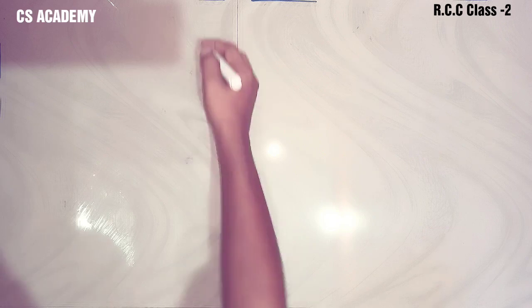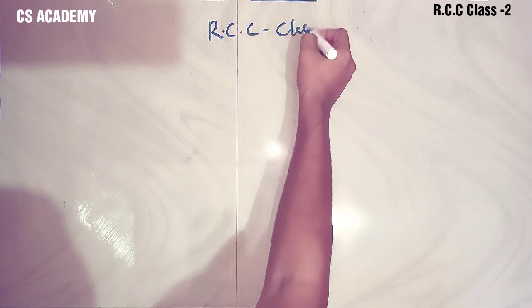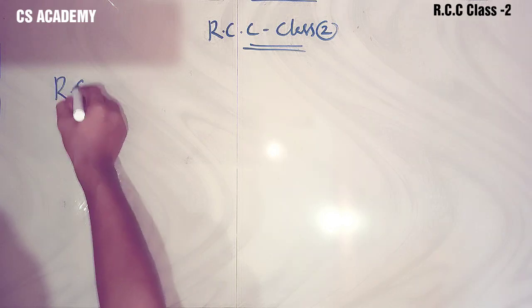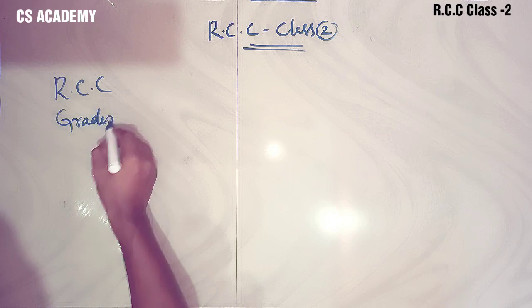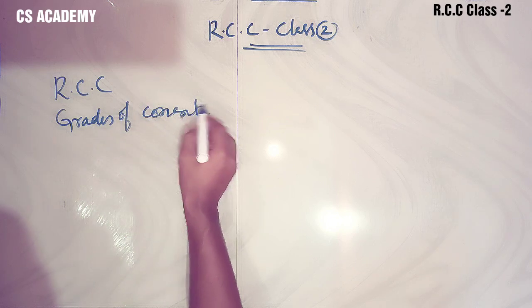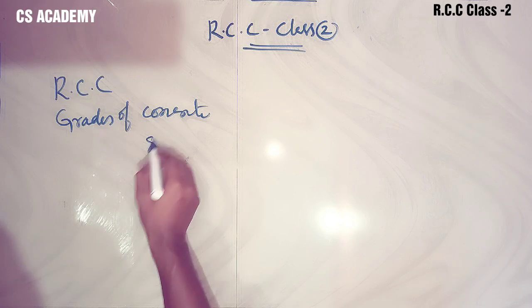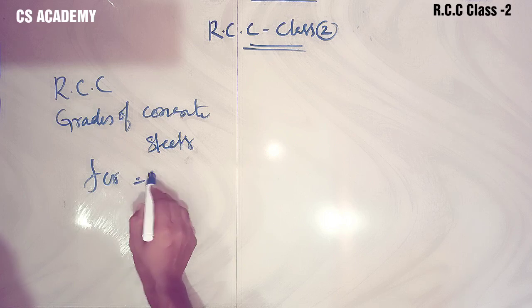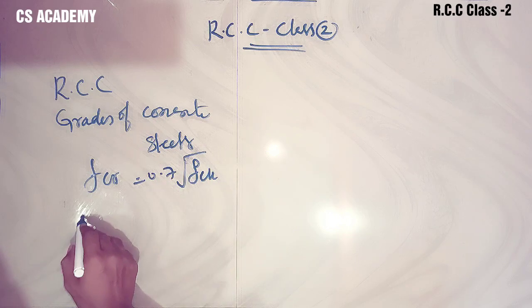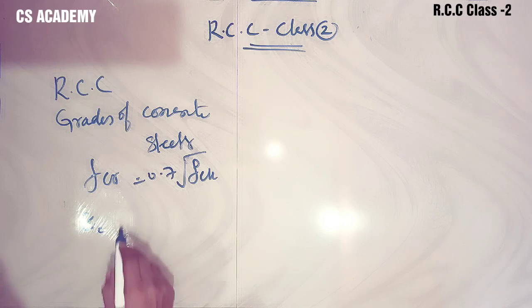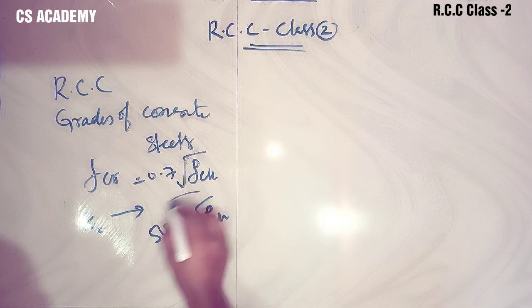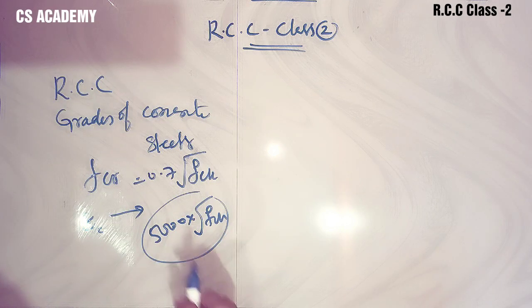Hello dear students, welcome to CS Academy platform. Today in this session I will explain the subject of reinforced concrete structures, Class 2. In the last session, Class 1, I already explained what is exactly the meaning of reinforced concrete structure, different grades of concrete, different grades of steels, tensile strength of concrete FCR = 0.7 times square root of FCK, and modulus of elasticity of concrete using the formula 5000 into square root of FCK.